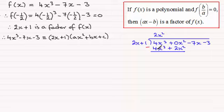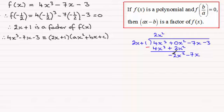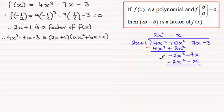We subtract to find the remainder: 4x cubed minus 4x cubed is 0, and 0x squared minus 2x squared gives us minus 2x squared. We bring down the next term, minus 7x, and start again. What do we multiply 2x by to give minus 2x squared? That's minus x. So minus x times 2x plus 1 gives minus 2x squared minus x.